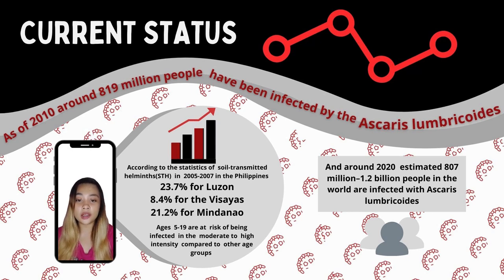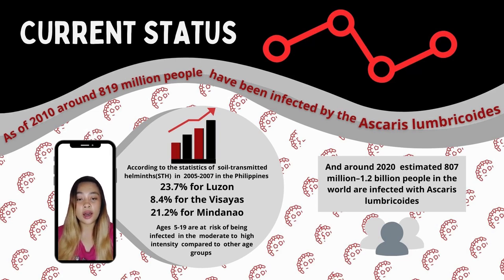It usually occurs in tropical countries such as the Philippines. In the Philippines, a study conducted a few years ago found that 23.7% of the population in Luzon, 38.4% in Visayas, and 21.2% in Mindanao were infected. The age range of 5 to 90 years old had a moderate to high risk of infection compared to other age ranges.